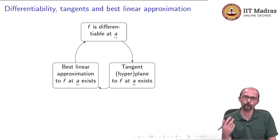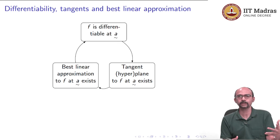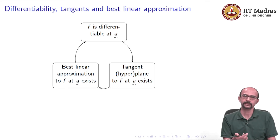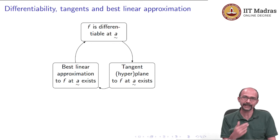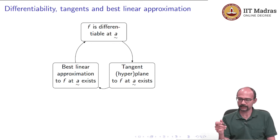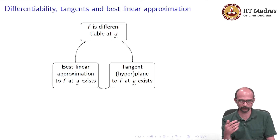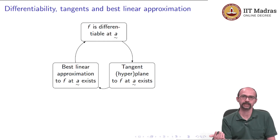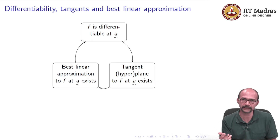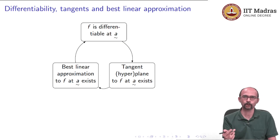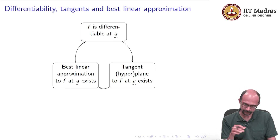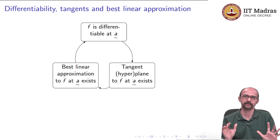I want you to know in this video what differentiability means, because you may later come across a statement in a text that f is differentiable for a multivariable function and wonder what that means. What it means is that limit exists. You should not worry too much about verifying that directly unless you want to get into the mathematics behind it. What you should remember is that differentiability is the same as saying the best linear approximation exists, and that the tangent hyperplane exists, and in particular that all directional derivatives are given by dot products of the unit vector with the gradient vector.